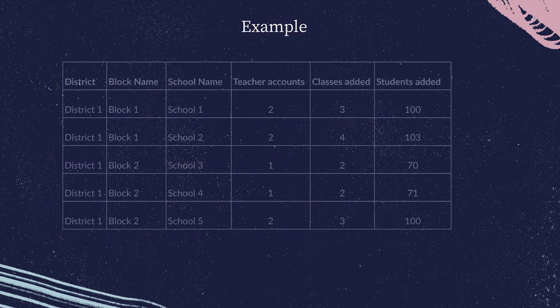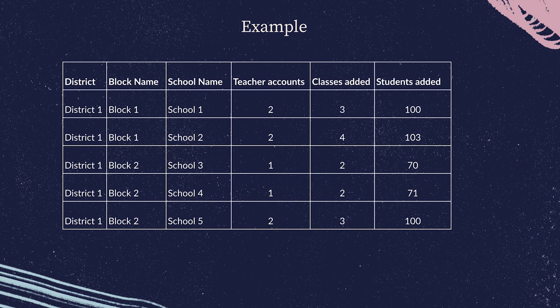Let's look at an example. You can collect data on your districts, blocks, and schools — such as the number of teachers who have registered, number of classes created, and number of students added to those classes. For instance, schools three and four have one teacher each who have created their classes, whereas all other schools have two teachers each. With this kind of data, you can identify schools that need support and schools that are doing well.